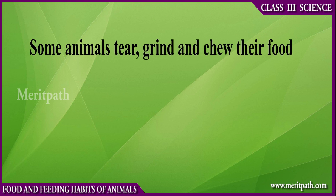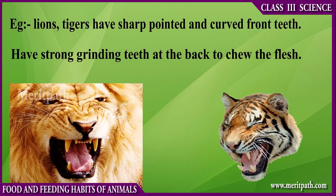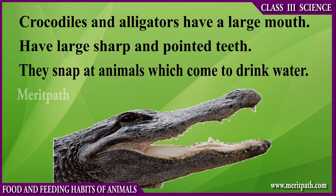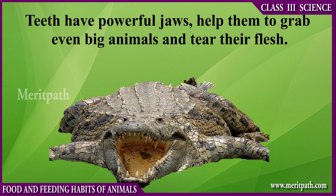Some animals tear, grind, and chew their food. For example, lions and tigers have sharp, pointed, and curved front teeth. They also have strong grinding teeth at the back to chew flesh. Crocodiles and alligators have large mouths with sharp, long, and pointed teeth. They snap at animals that come to drink water, and their powerful jaws help them grab and tear even bigger animals.